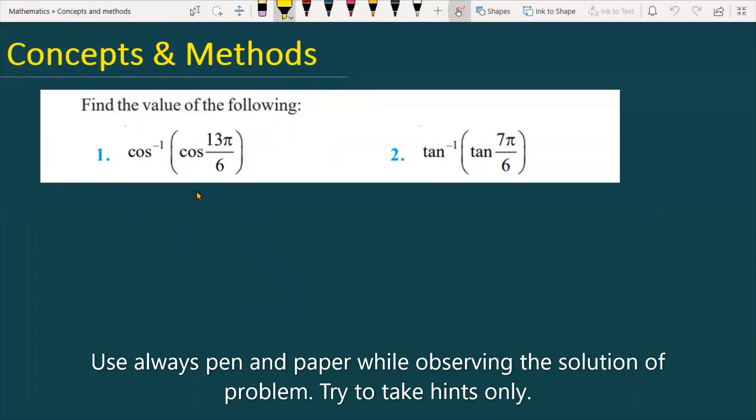The question is find the value of the following: cos inverse cos 13π upon 6, and the second question is tan inverse tan 7π upon 6. So let's see how we are going to solve the given problem.